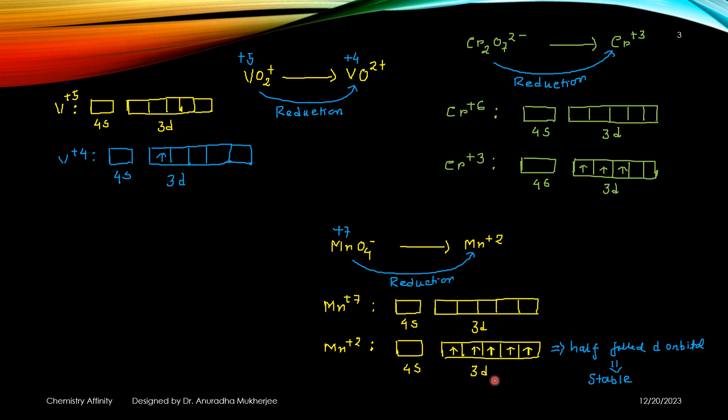Now here we can see 3D5 means it's a half-filled d orbital which is a very stable electronic configuration. It indicates that MnO4- when it converts to Mn plus 2, it is a feasible process because due to this conversion, it's getting a half-filled d orbital.